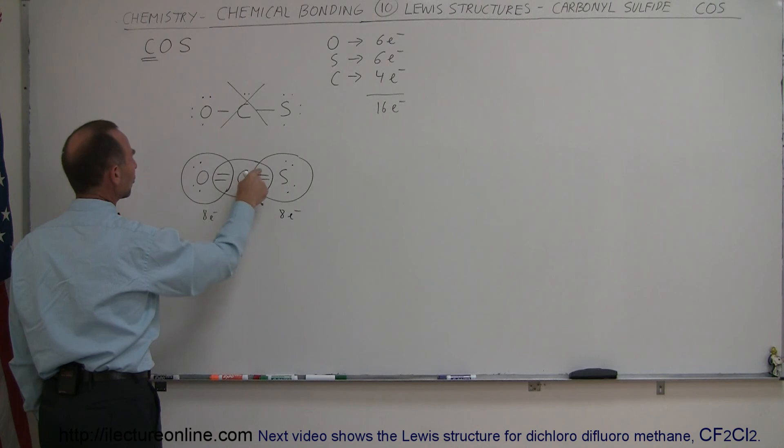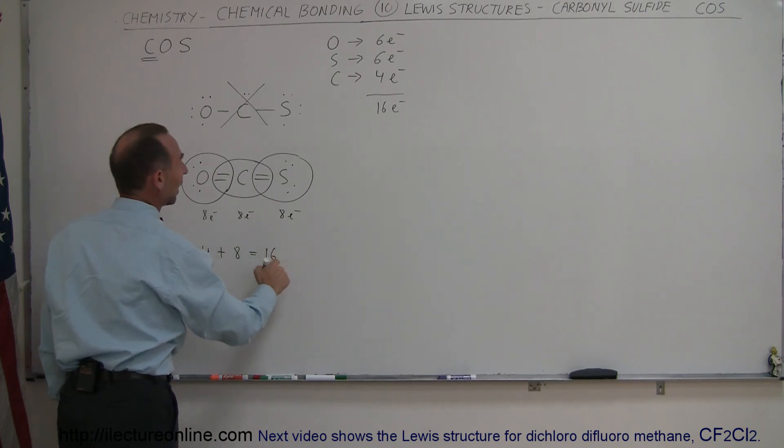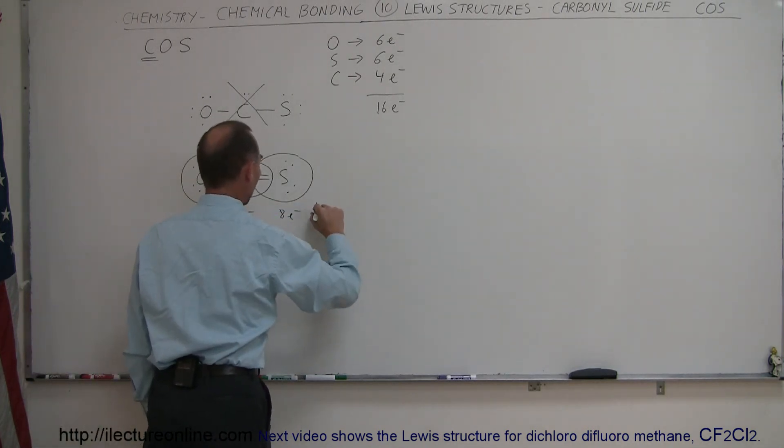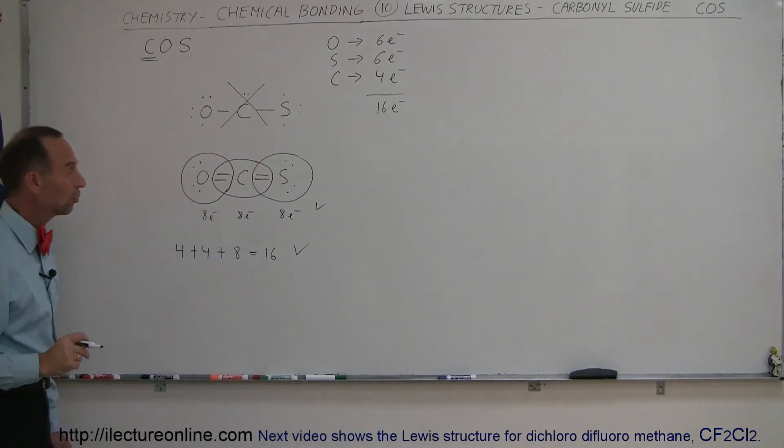And then we have two, four, six, eight electrons in the four bonds, so plus eight. And eight plus eight is 16, and 16 matches to 16, so the octet rule is followed, and the number of valence electrons used is followed. So it looks like we have the correct Lewis structure here.